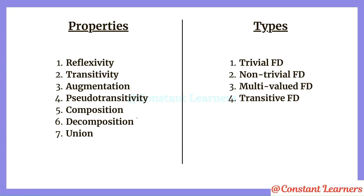Hello learners, welcome to Constant Learners. In the previous video we discussed functional dependency — how it is denoted, when it exists, and when it does not exist. In this video we are going to discuss the properties of functional dependency and the types of functional dependency. There are three main properties and four derived properties, and four types of functional dependency.